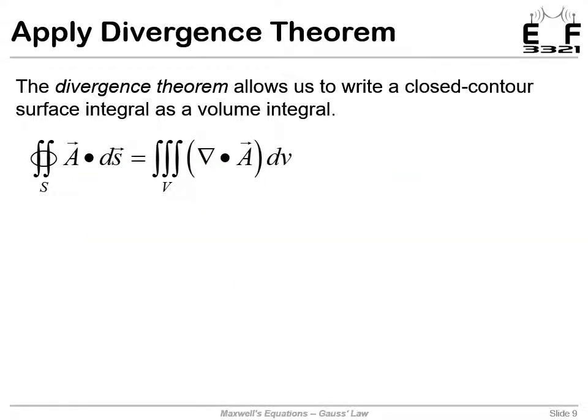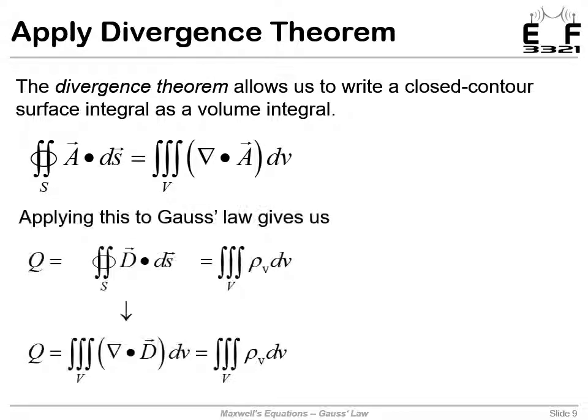To get Gauss's law in differential form, we will apply the divergence theorem. Remember how we'll use the divergence theorem: we can convert closed contour surface integrals to volume integrals. If we look at Gauss's law, it had a closed surface integral. This is when we were integrating the flux around some surface. We can convert this to a volume integral that is now integrating the divergence of D throughout the volume.